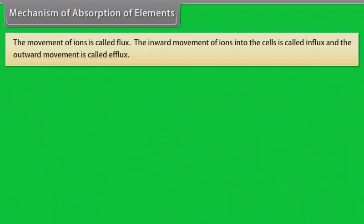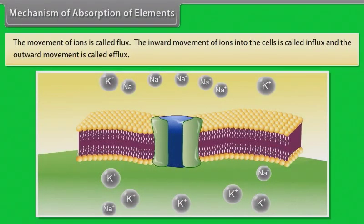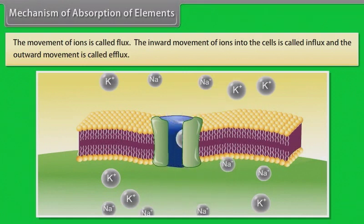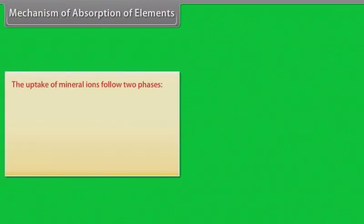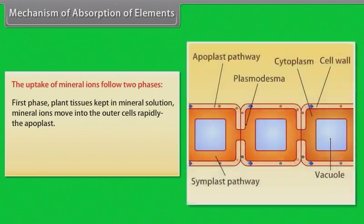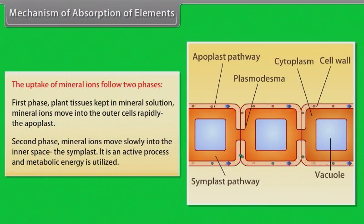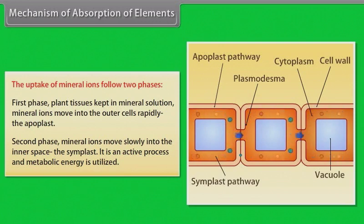Mechanism of absorption of elements: the movement of ions is called flux. The inward movement of ions into the cells is called influx, and the outward movement is called efflux. The uptake of mineral ions follows two phases. First phase: plant tissues kept in mineral solution — mineral ions move into the outer cells rapidly through the apoplast. Second phase: mineral ions move slowly into the inner space, the symplast. It is an active process and metabolic energy is utilized.